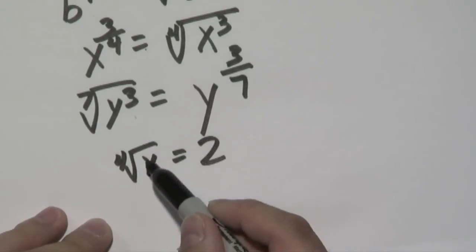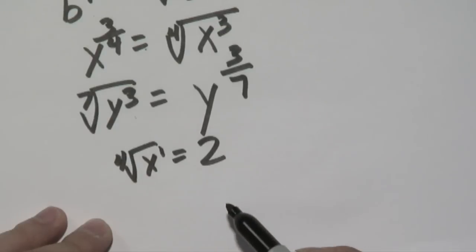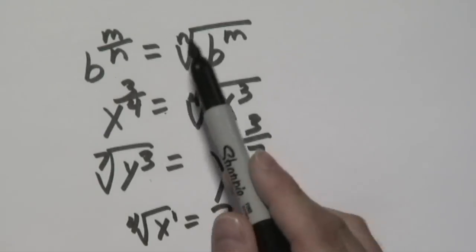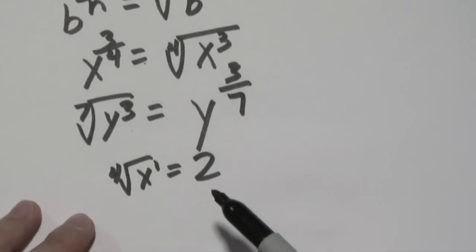Now keep in mind here, because you don't see an exponent on the inside, you know the exponent is 1. But what you can do is use the properties that we've been talking about and convert this to an exponent.